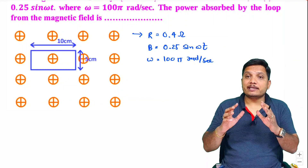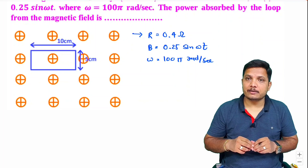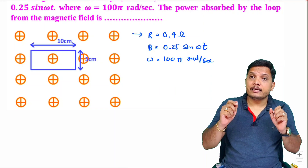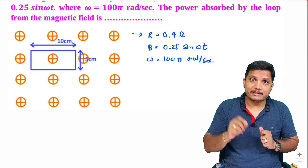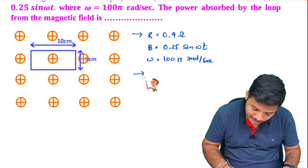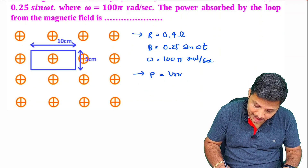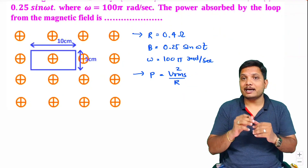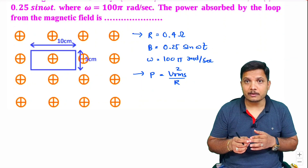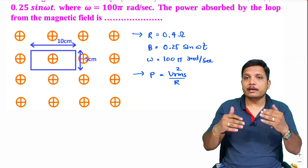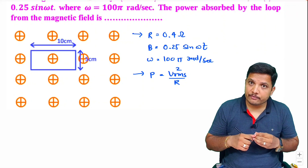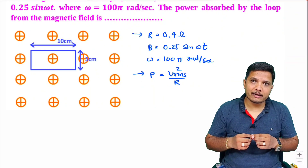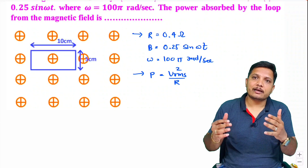Now, how much power is getting absorbed in the resistance? One should know the absorbed power by resistance is V_RMS squared divided by resistance R. So our agenda here is to identify what V_RMS is. V_RMS can be identified based on the induced EMF as per Faraday's law. So how much induced EMF is there? That will be based on how much flux is present.